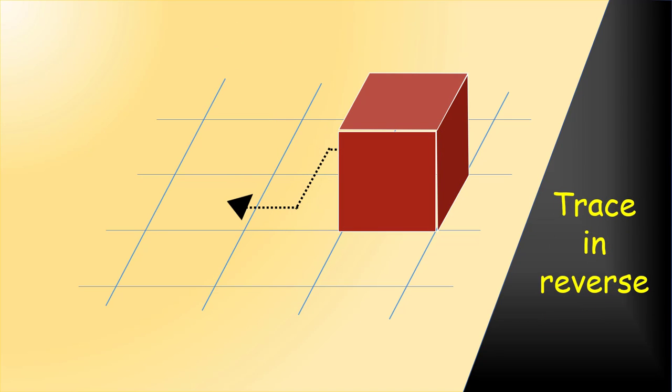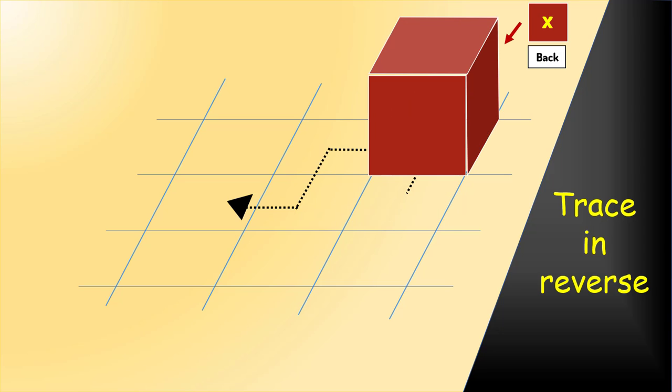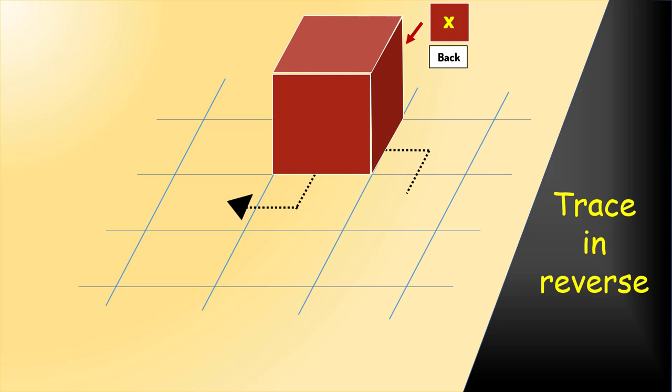In the final position, let's say the number on the top is x and now let's trace its position in reverse. In the previous position, x would be on the back face. And previous to that, x would still be on the back face. Before that, x would be on the top.